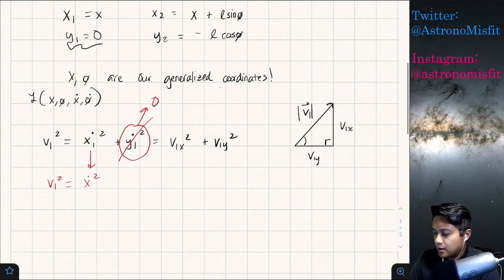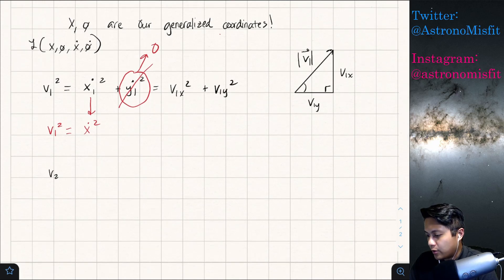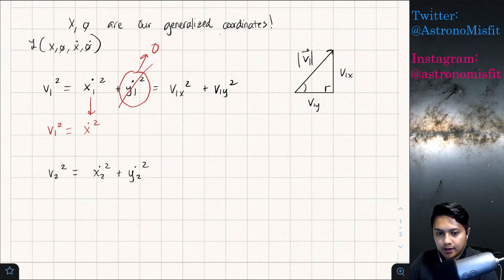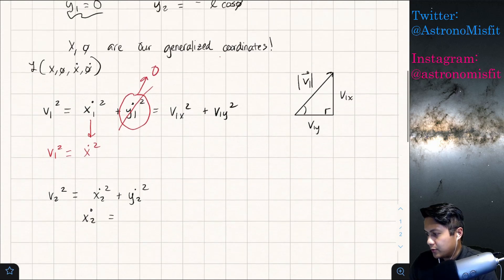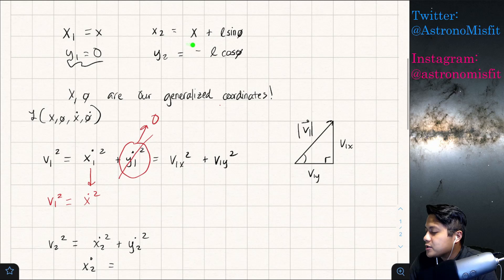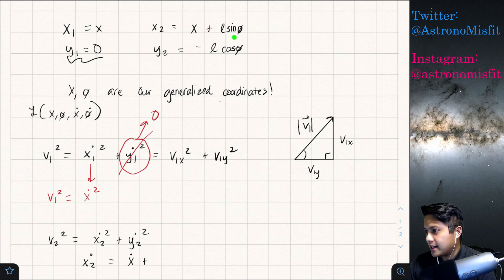So what else do we want to do? We want to also do the same thing for the v2 term. So v2 squared is equal to x2 dot squared plus y2 dot squared. And what is that? Well, we can say that x2 dot is equal to, if we look at what x2 is, x2 is right here, it's given by x plus l sine phi. That means the first term will just be x dot plus, now we take the derivative of l sine phi. So derivative will just be l cosine of phi. But remember, phi is a function of time.